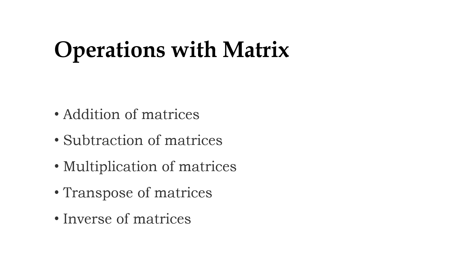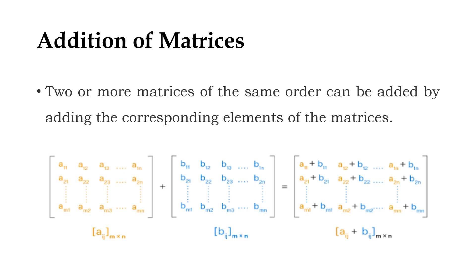Transpose of matrices, and inverse of matrices. Addition of matrices: The addition of matrices can only be possible if the number of rows and columns of both the matrices are the same. While adding the matrices, we have to consider the corresponding elements of the matrices.